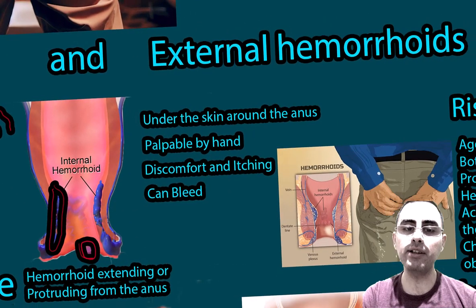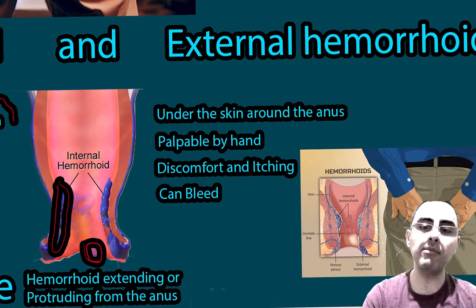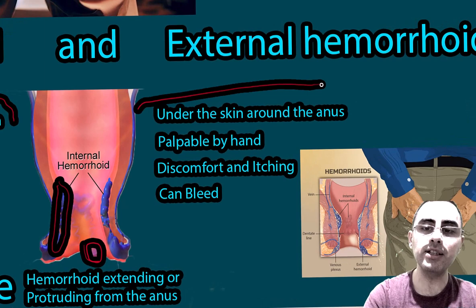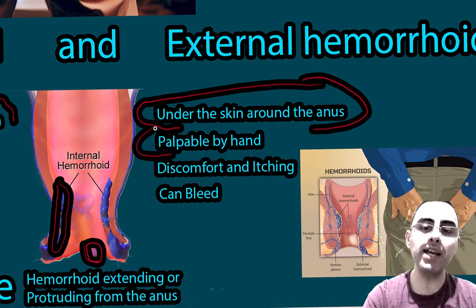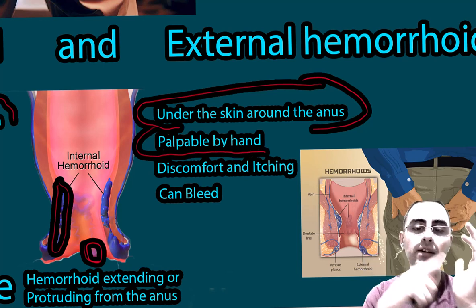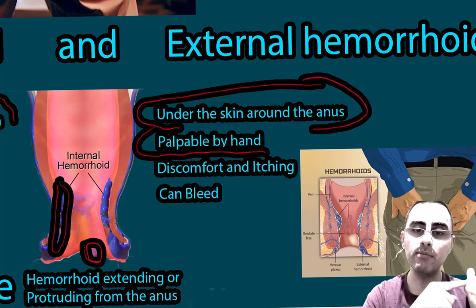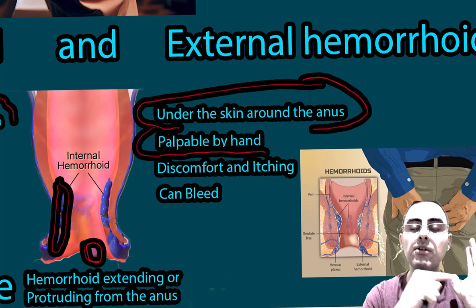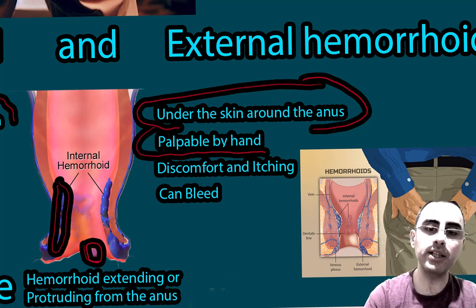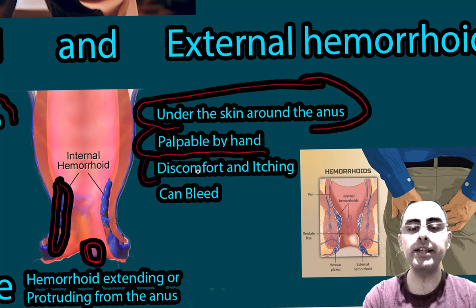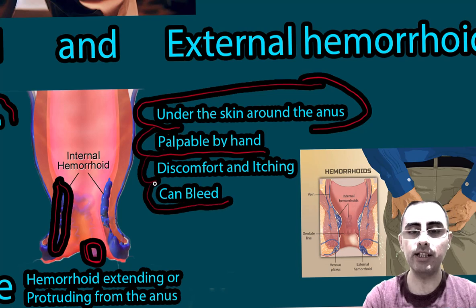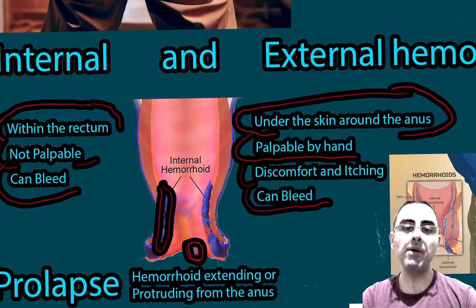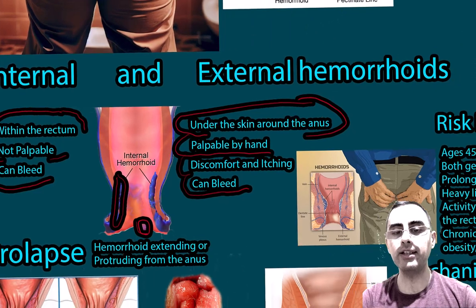External hemorrhoids are under the skin around the anus, so they are palpable — a person can feel them by palpating around the anus. They can cause discomfort and itching, especially during prolonged sitting, and they can also bleed. These are the two types of hemorrhoids: internal and external.